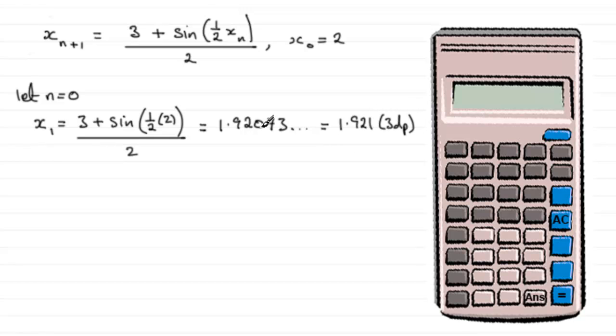Now we could put this answer through for our next value of x₁ to get x₂. x₂ would be equal to 3 plus sine of a half of this value all divided by 2, but it's quite tedious when you do it like that.